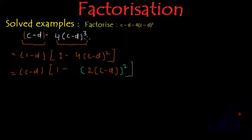What we had over here? We had 4(c-d)². This can be written as 2²(c-d)².